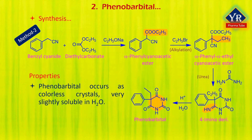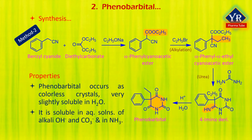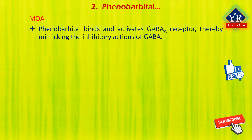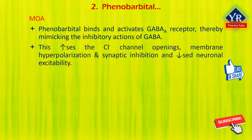Phenobarbital occurs as colorless crystals or a white crystalline powder, which is very slightly soluble in water. It is soluble in aqueous solutions of alkali hydroxides and carbonates and in liquid ammonia. Phenobarbital binds to and activates the GABA-A receptor, thereby mimicking the inhibitory actions of GABA in the brain. The effects include increased frequency of chloride channel openings, membrane hyperpolarization, synaptic inhibition, and decreased neuronal excitability. In addition, this agent inhibits glutamate-induced depolarization.